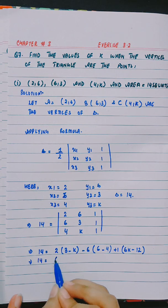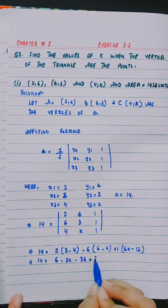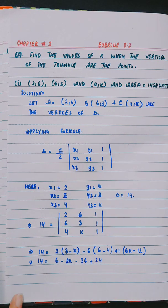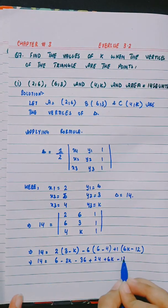14 is equal to 6 minus 2k minus 36 plus 24 plus 6k minus 12.